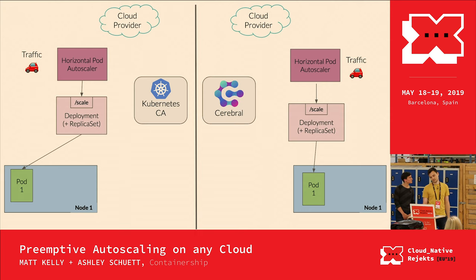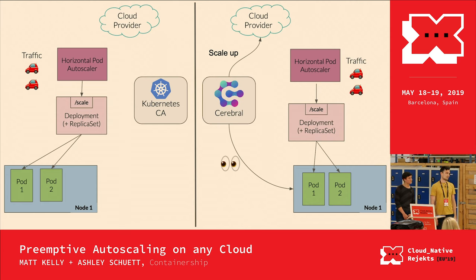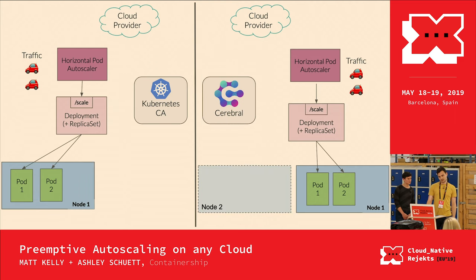A little while later, you get more traffic — more car emojis — and now you're at about 66% utilization on that node. If you have Cerebral configured to scale up at 60%, it's going to see you're above the threshold configured in the autoscaling policy and ask the cloud provider to scale up. In the meantime, the Kubernetes cluster autoscaler isn't doing anything because there's no pod in a pending state. On the Cerebral side, a new node is starting to come up to prepare for more traffic.